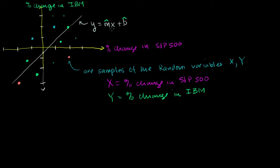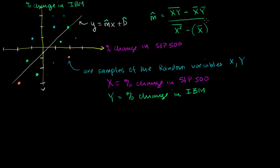We can clearly use the formulas we've been using: M̂ is equal to the mean of the products of each XY coordinate, minus the mean of X times the mean of Y, all over the mean of the X-squareds minus the mean of X, squared. Since we are dealing with a sample, this is giving an estimate — that's what the hat notation means. It means it's an estimate of the true slope.